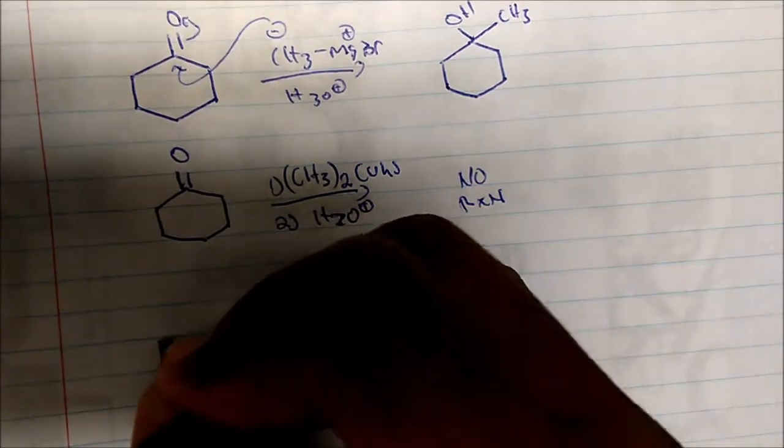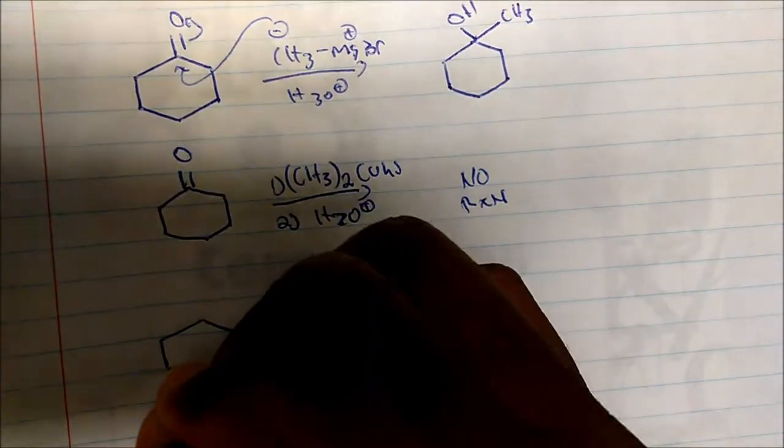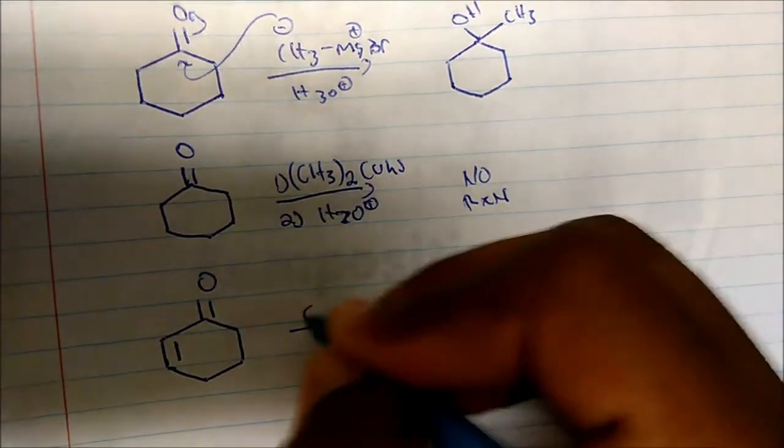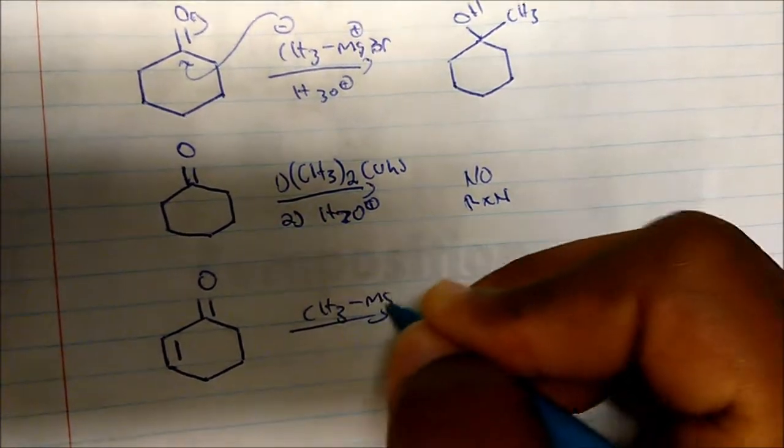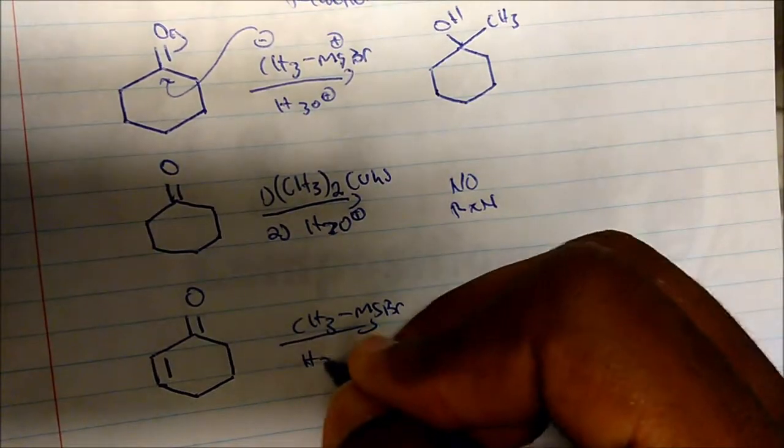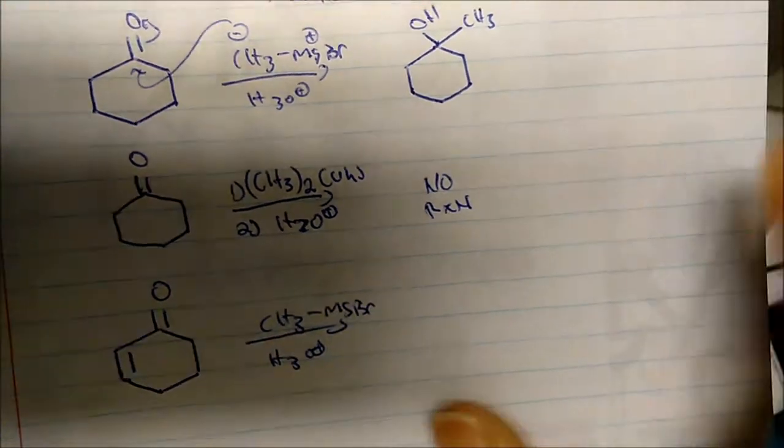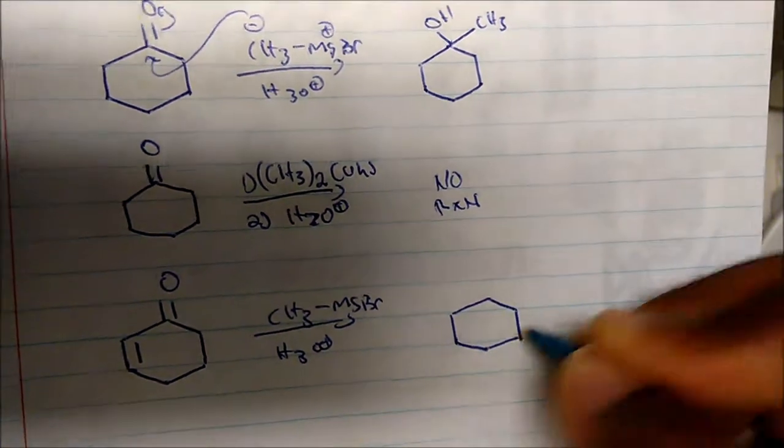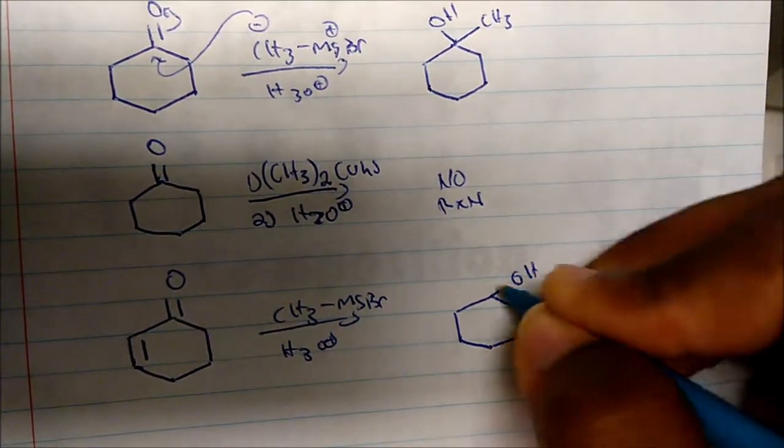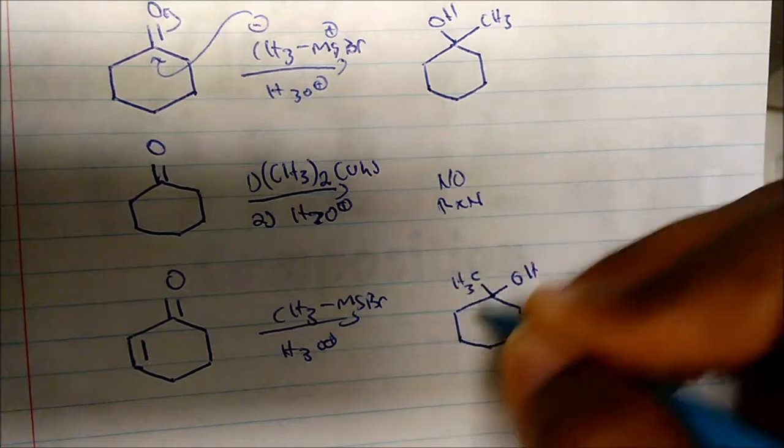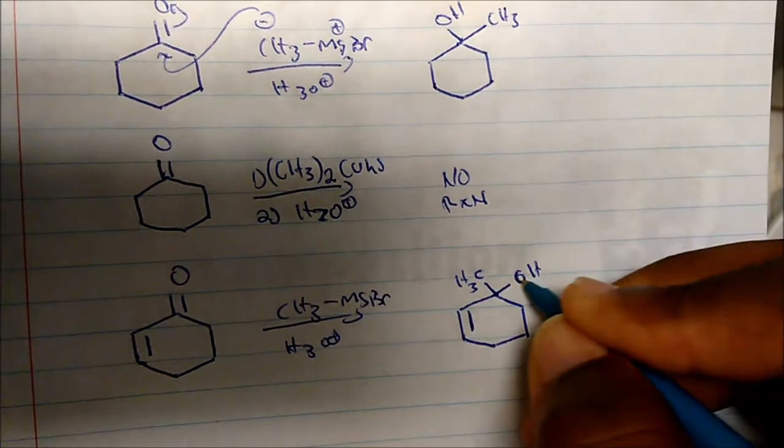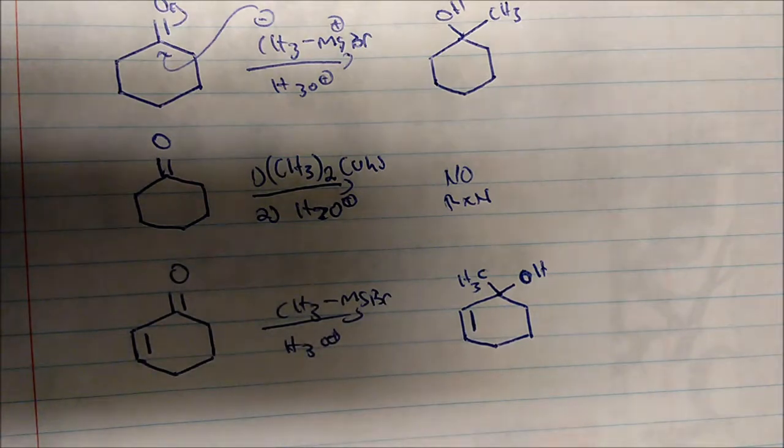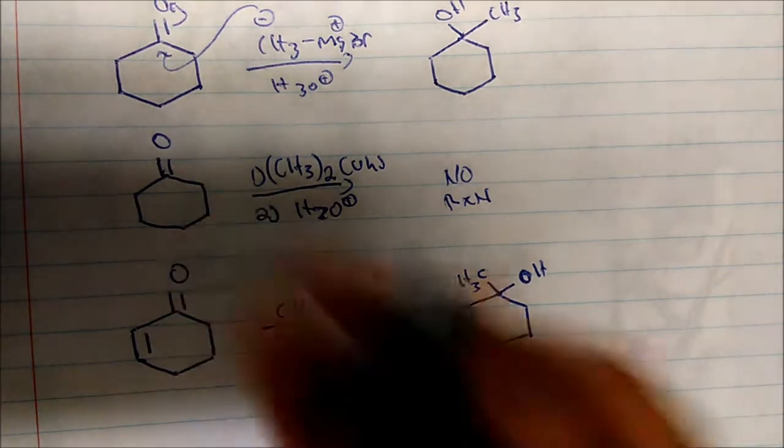If I take an alpha-beta unsaturated ketone and I do Grignard chemistry on it, methyl magnesium bromide in acid workup, here's what I get: I'm going to create my alcohol, CHD, and I'm going to keep my double bond. You can definitely see that all we're doing is adding to the carbonyl in Grignard chemistry.